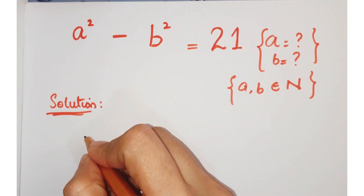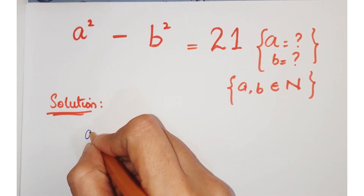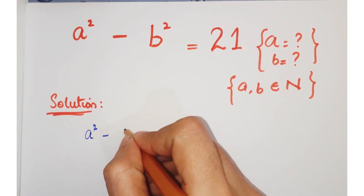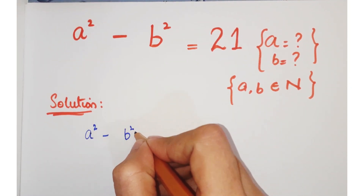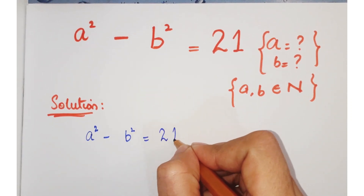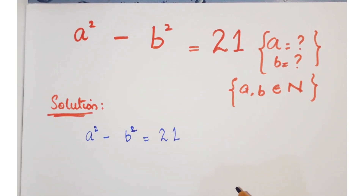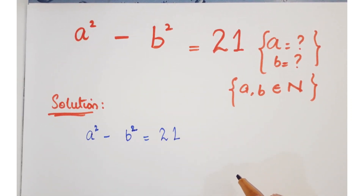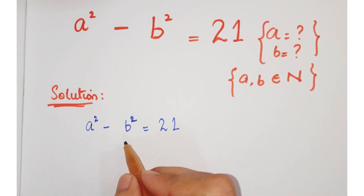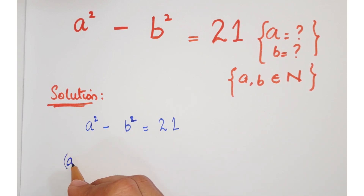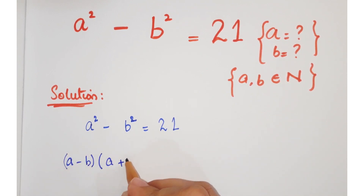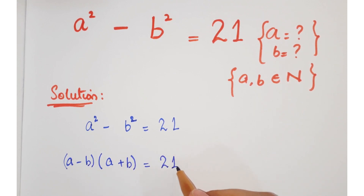Hello friends, look at this question. The question is a squared minus b squared equals 21, and we have to find the values of a and b. Here you can apply the algebraic identity: a minus b into a plus b equals 21. Now we have to find the factors of 21.